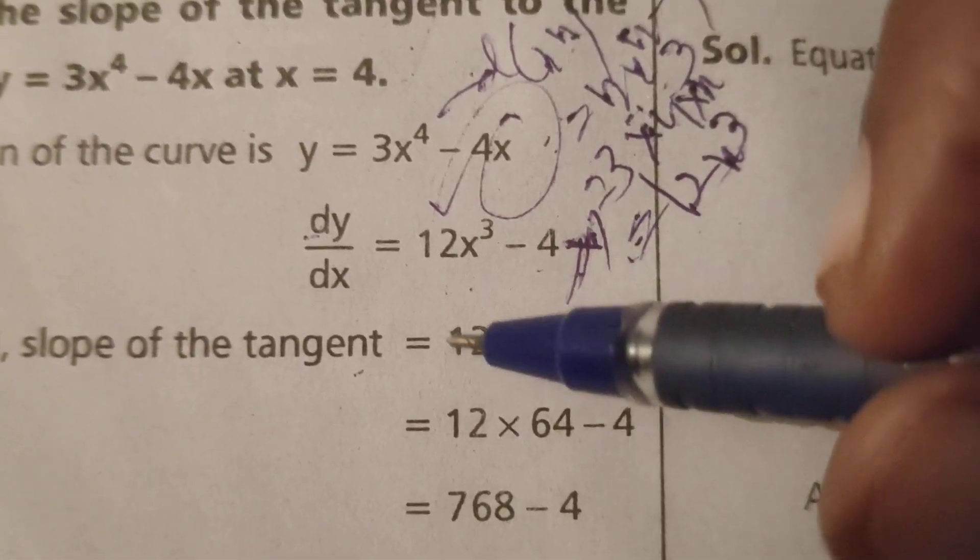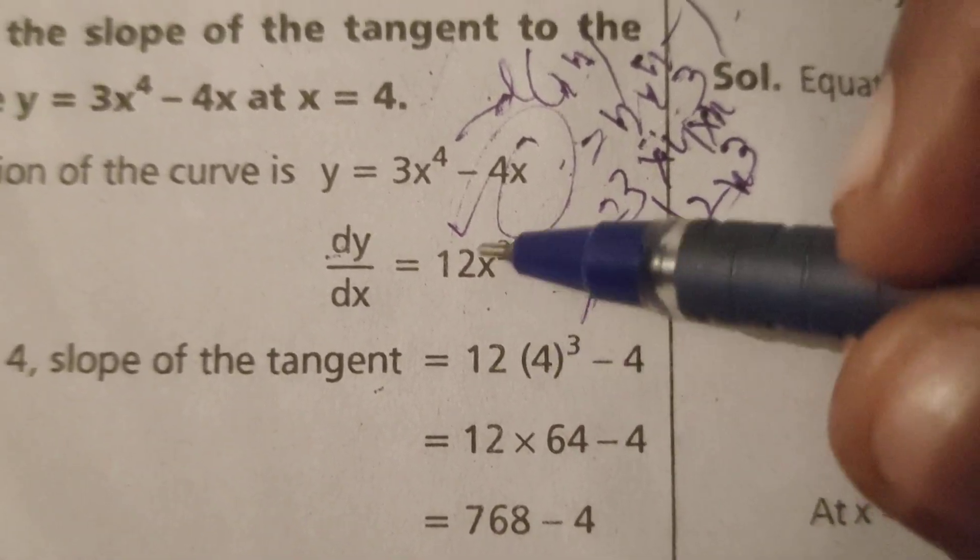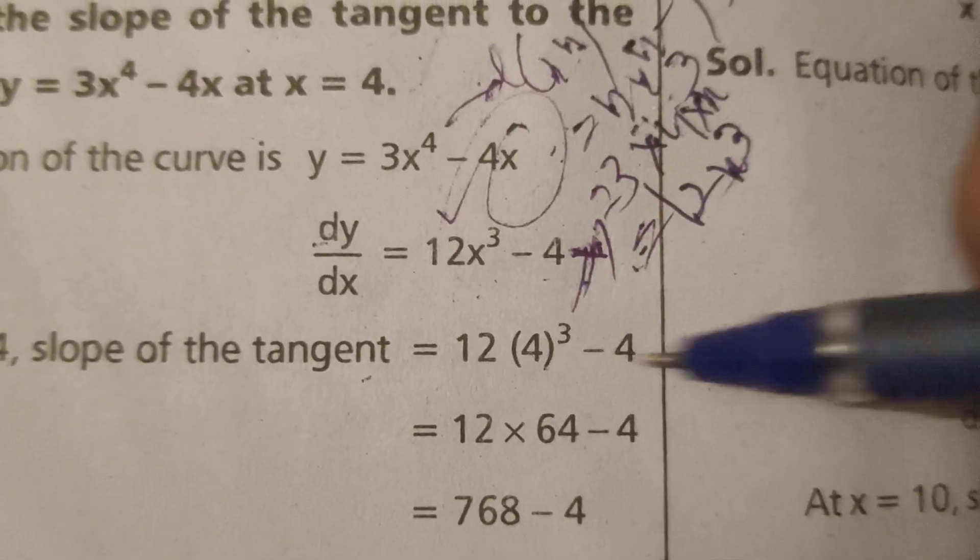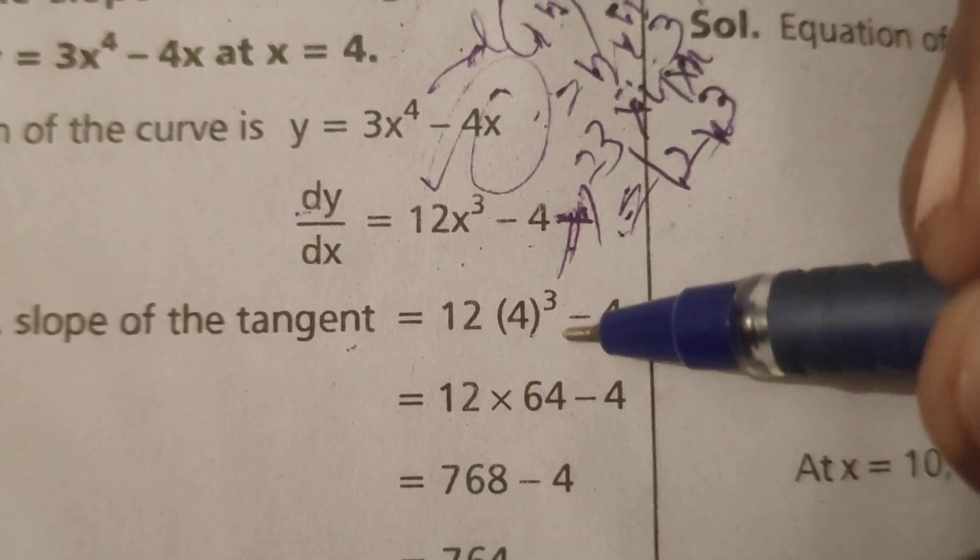By this equation, substitute in place of x, 4. So 12 times 4 cubed minus 4. What is 4 cubed?